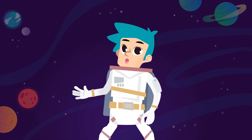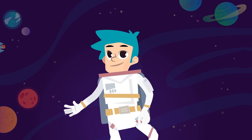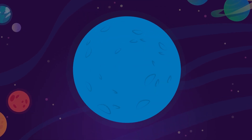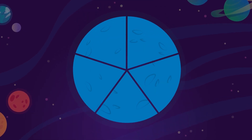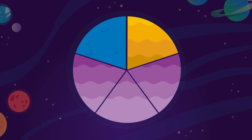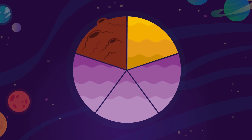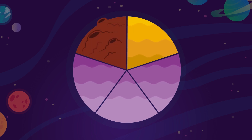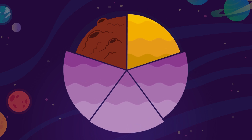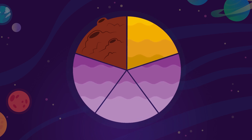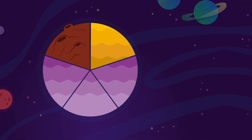Will you help me figure out something else? Learnethon, our neighboring planet, is divided into five equal parts. There is yellow water on one-fifth of the planet, purple water on three-fifths of the planet, and volcanic soil on one-fifth of the planet. How much of the land on planet Learnethon is covered with water?